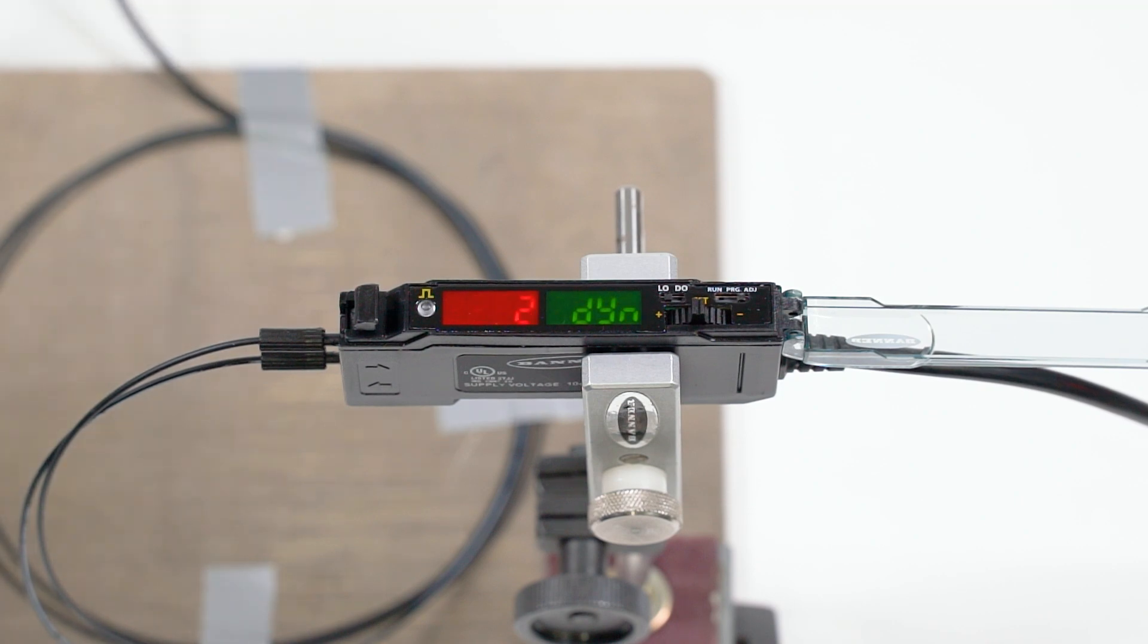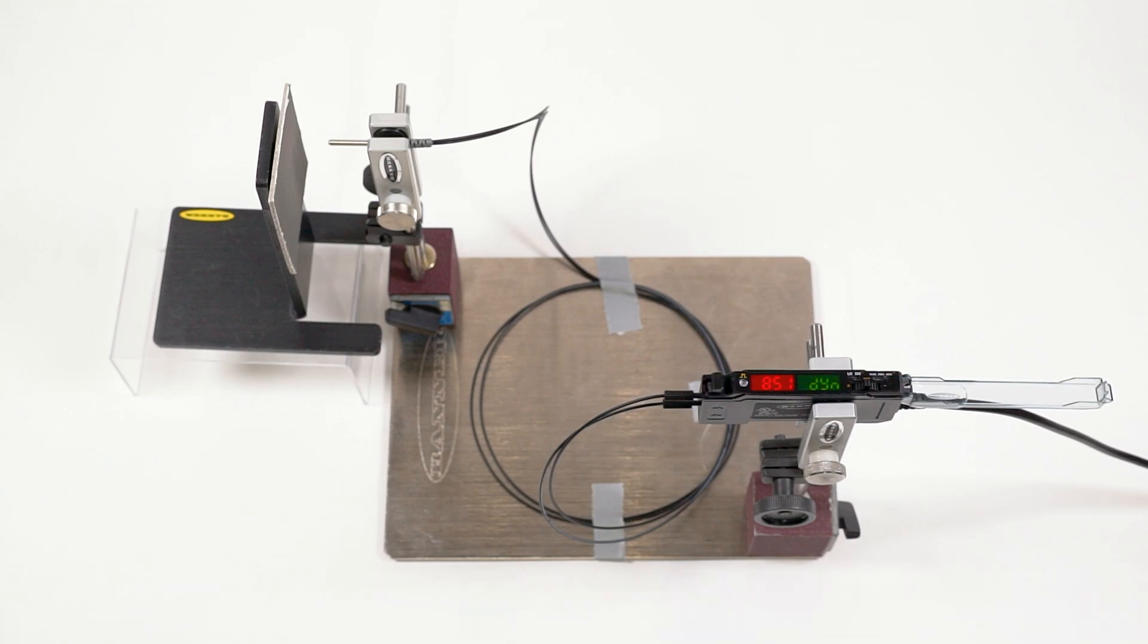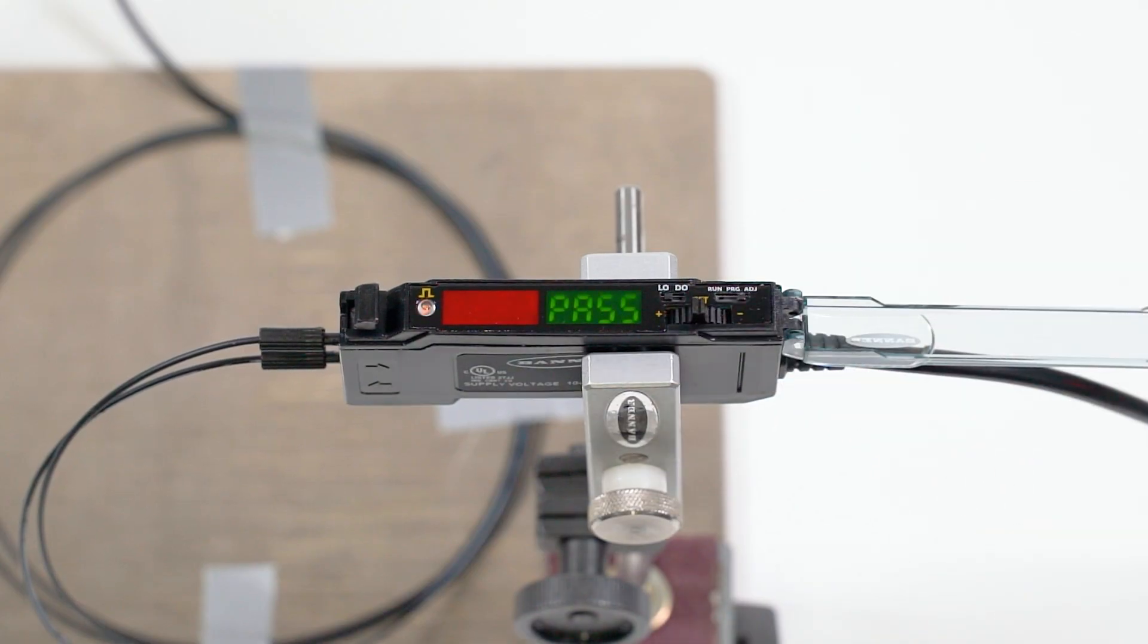After presenting several conditions, press the rocker button again. The display will show pass, indicating that the new conditions have been taught successfully.